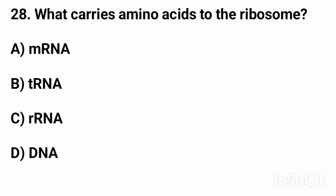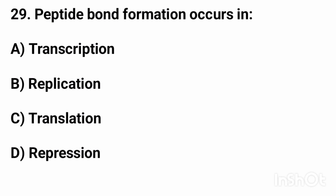Question number twenty-eight: what carries amino acids to the ribosome? The right answer is option B, tRNA. Question number twenty-nine: peptide bond formation occurs in? The right answer is option C, translation.